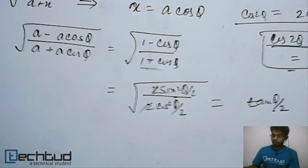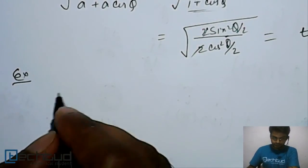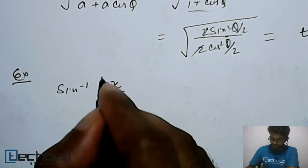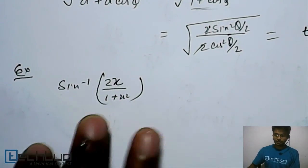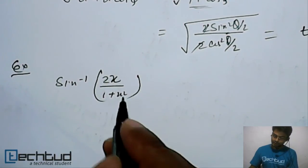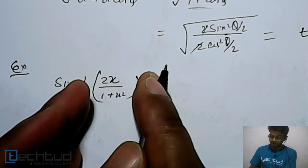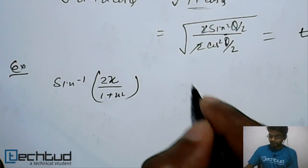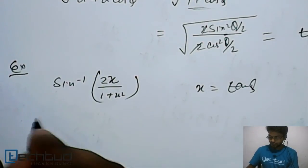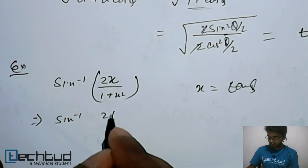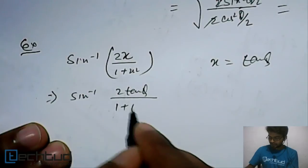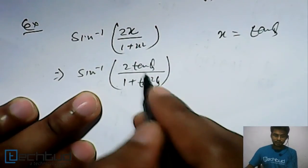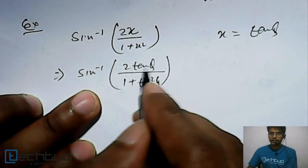Let's solve an example: find the differentiation of sin⁻¹(2x/(1+x²)). We can use substitution rather than direct differentiation. We substitute x = tanθ, so it becomes sin⁻¹(2tanθ/(1+tan²θ)). Now, 2tanθ/(1+tan²θ) is the identity for sin2θ expressed in terms of tanθ.